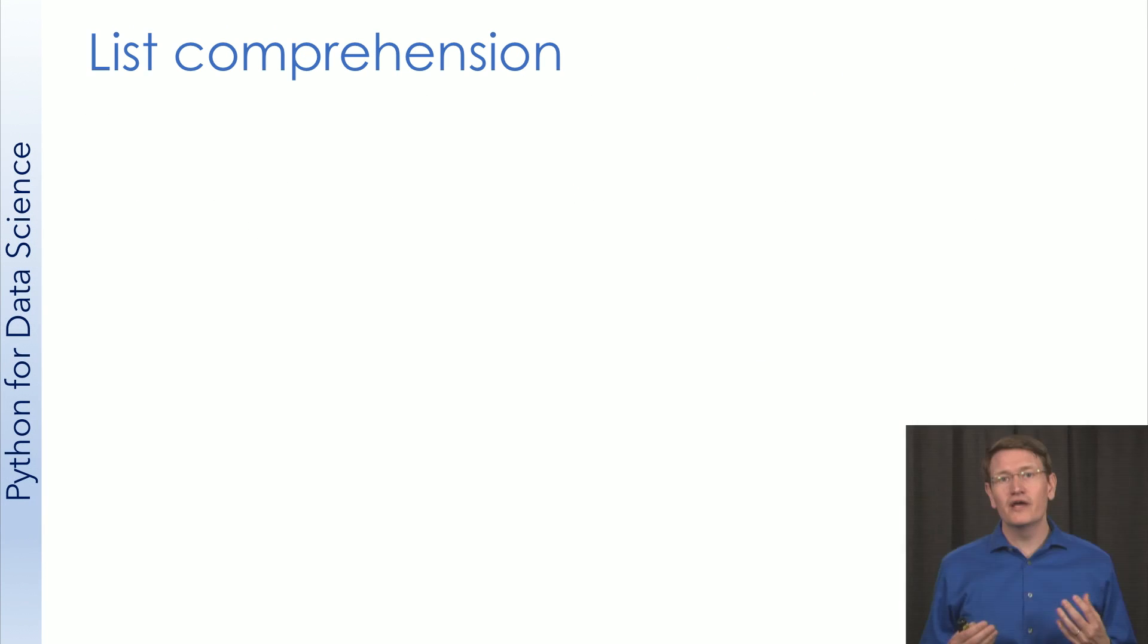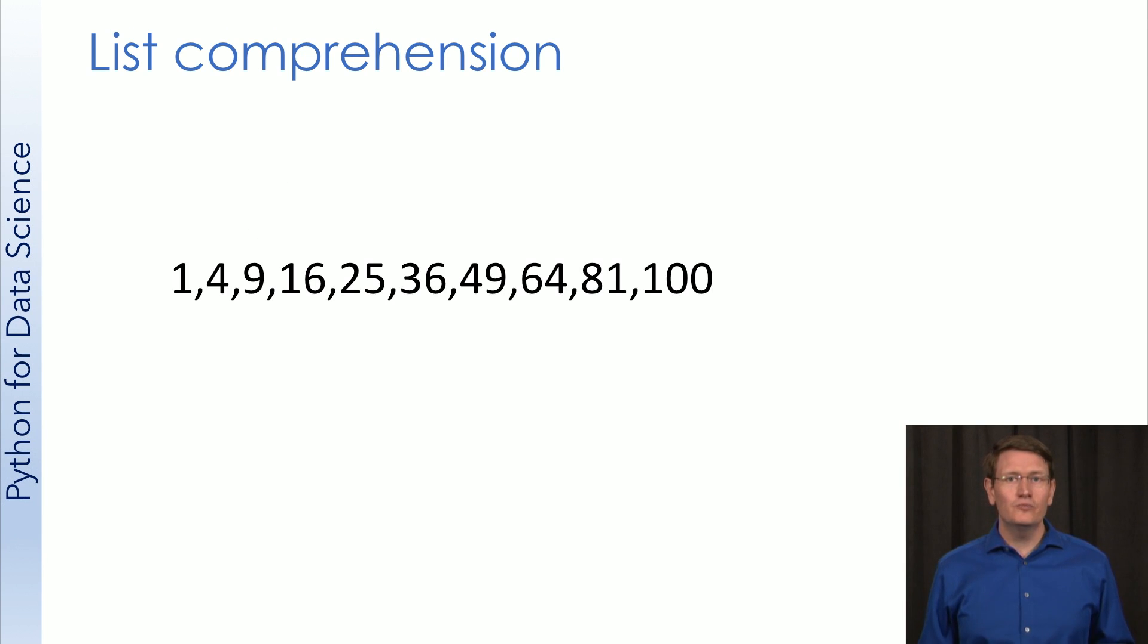Comprehension is a way to build lists or dictionaries quickly. Suppose I want to build a list of the squares from 1 to 10. You're probably tempted to set up a loop for this if you have a background in other languages. But it turns out we can do this really easily in Python.